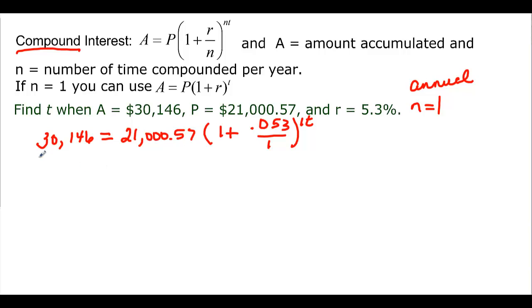To solve we want to get rid of what's in front of the parenthesis because our unknown has to do with that parenthesis. We're going to take our 30,146 and divide that by the 21,057 equal to our 1.053 to the t. Now I have a base raised to an exponent.